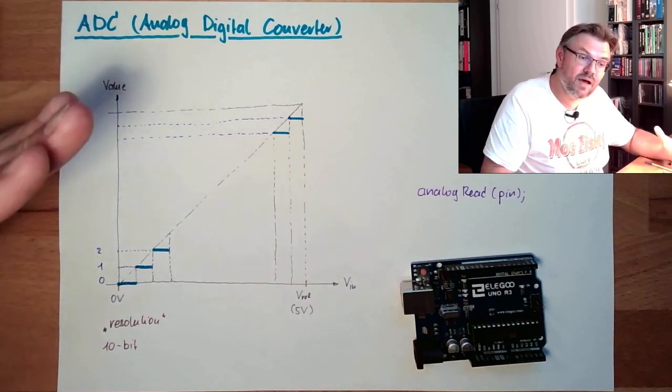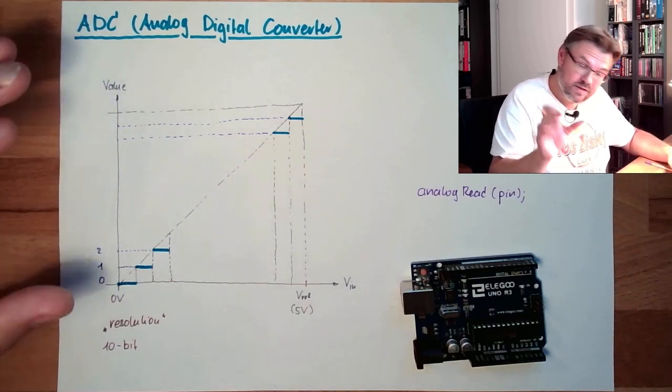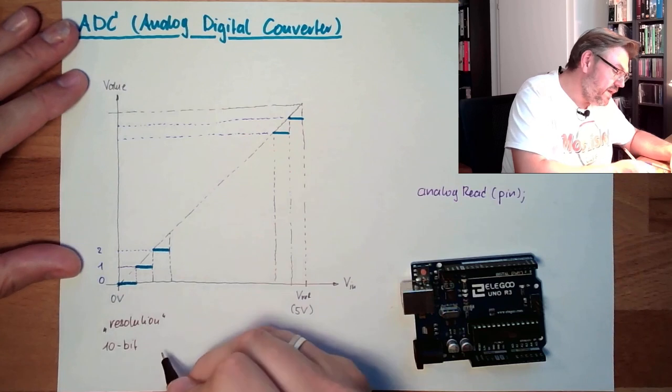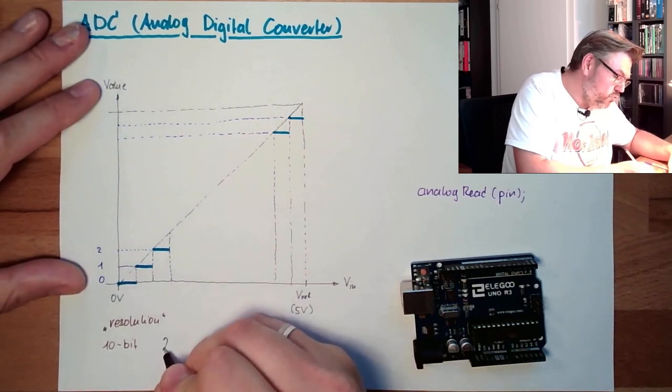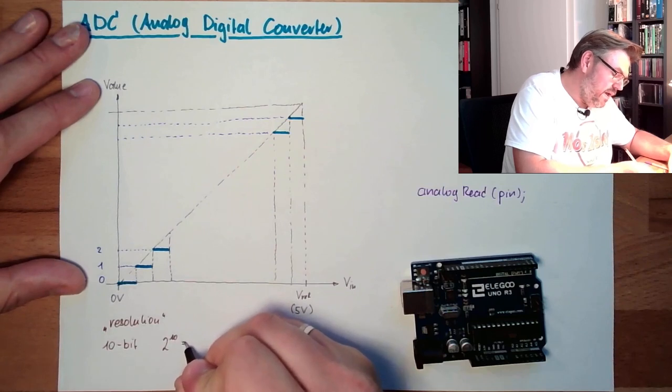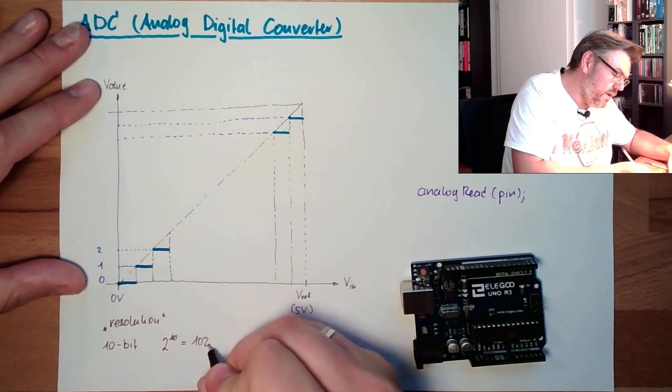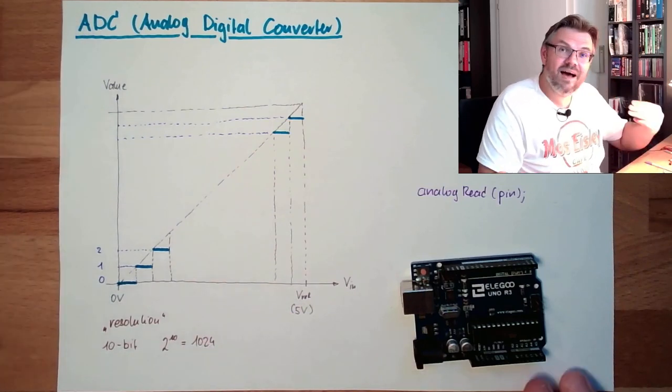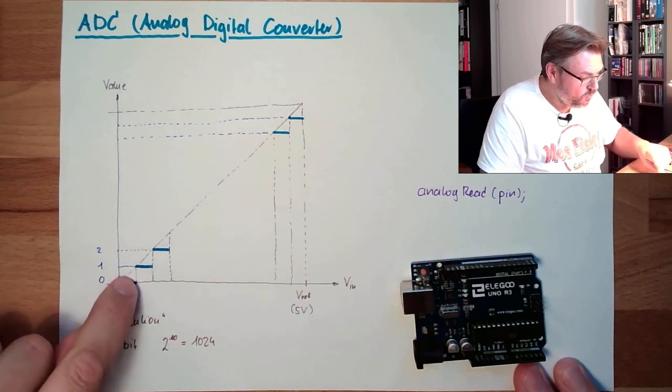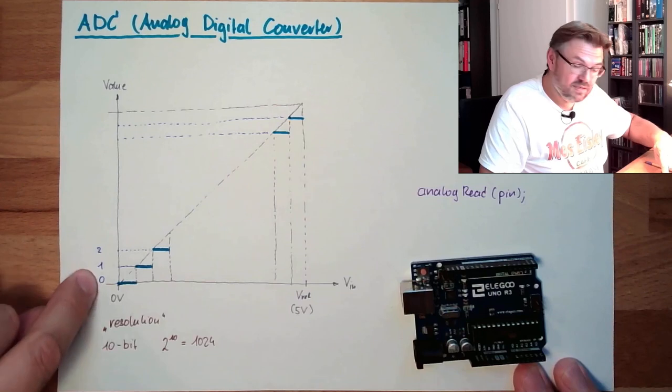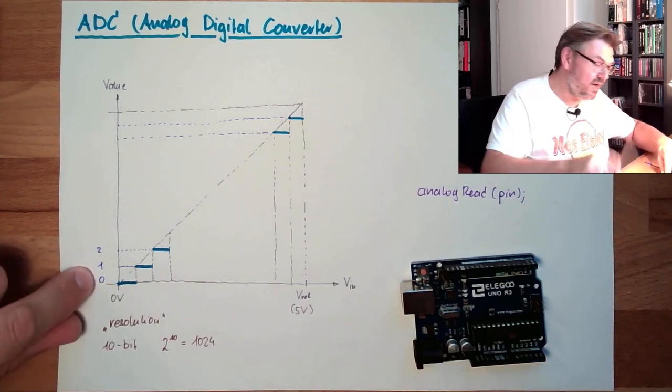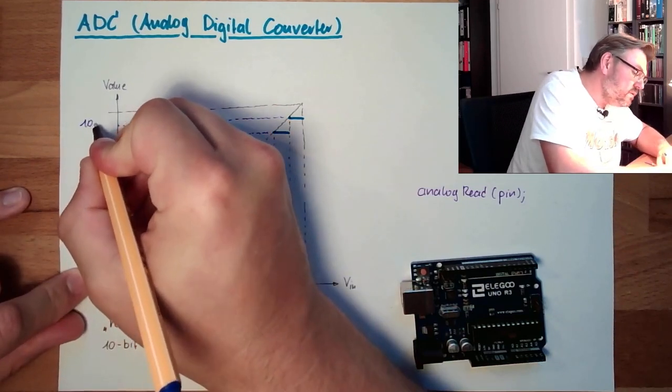And with a 10-bit number, 10 binary digits, we can display a number up to 2 raised by the power of 10. And these are 1024 different classes. So we are dividing this in 1024 different classes. The first class is zero. So the last class is 1023.